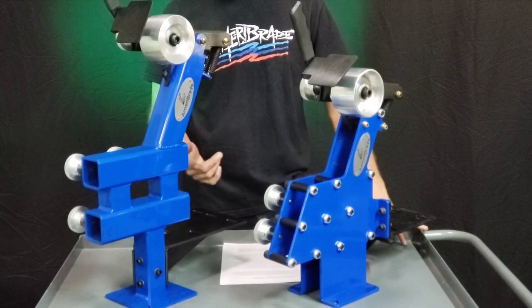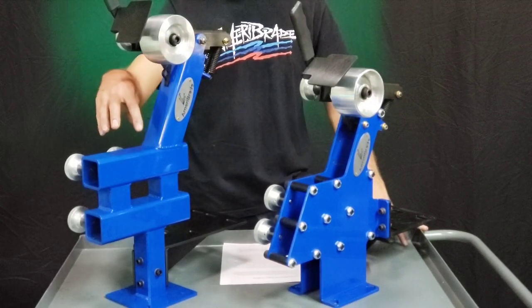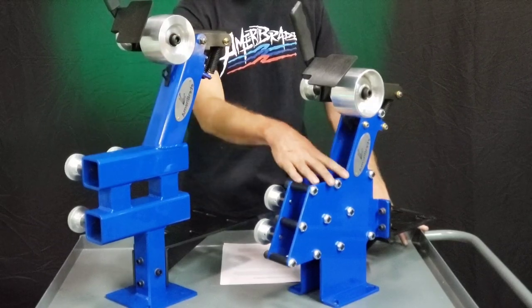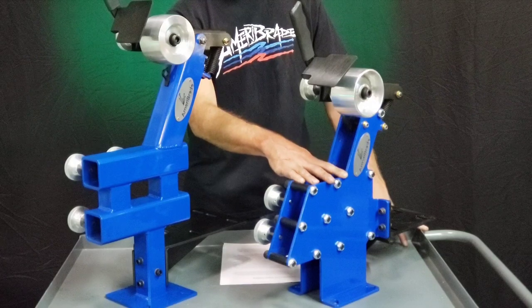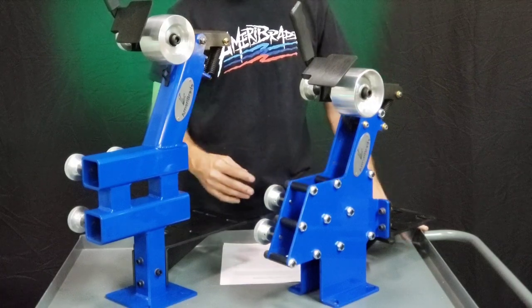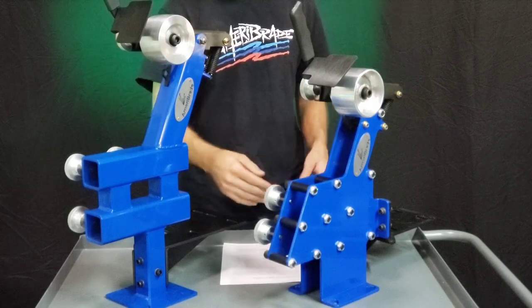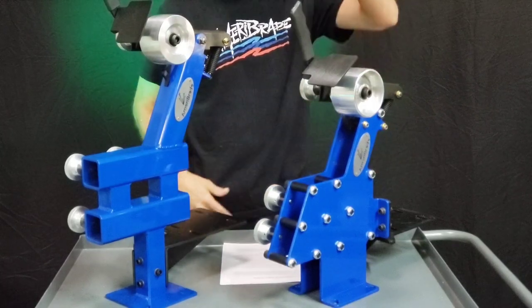The most obvious difference you can see in their construction is that the Classic is a welded tube frame, whereas the Fastback is a bolted together plate design. Also, the Classic is a little bit shallower and taller, whereas the Fastback is a little bit deeper and shorter.